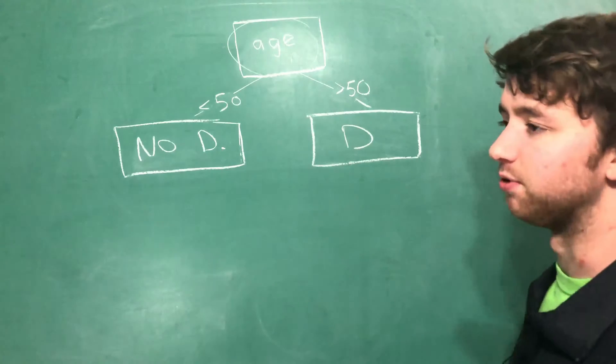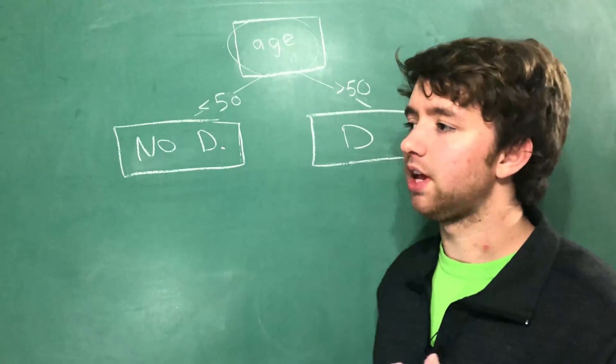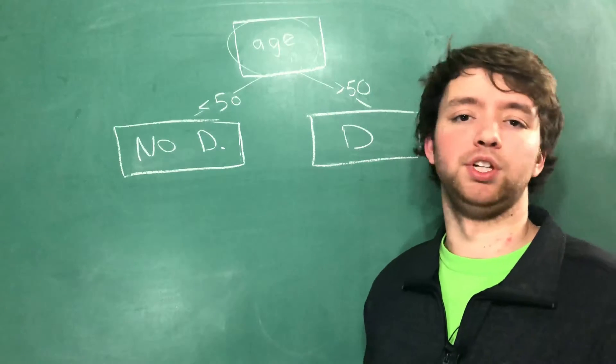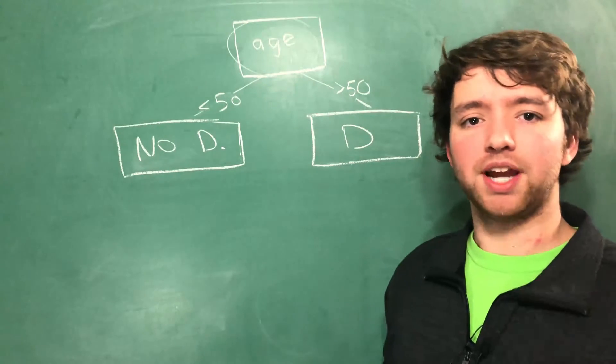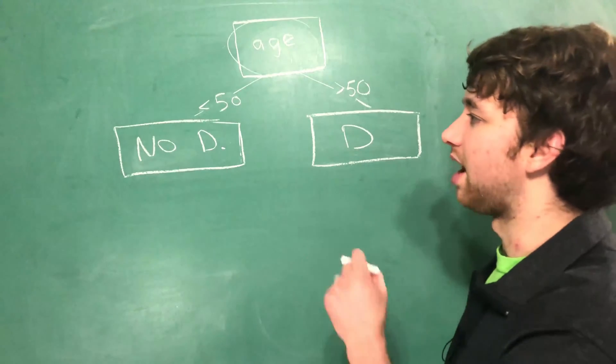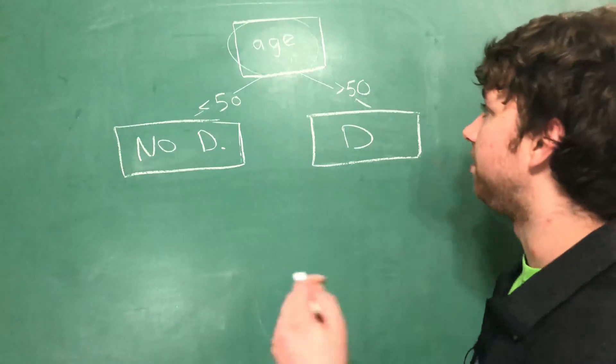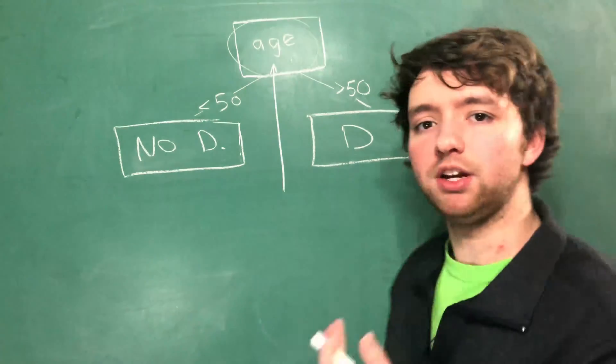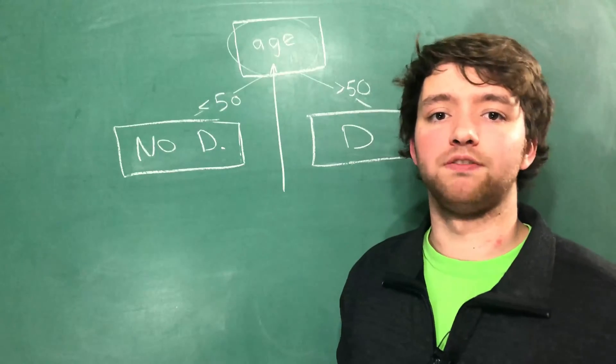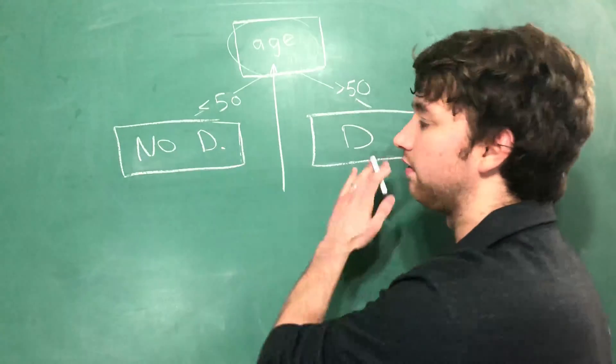In a perfect world it would be this simple. You know, you go into the doctors. Hey doctor, I think I might have diabetes. Well how old are you, 49? Nope, you don't have diabetes, but give it a year. But it's not that simple. And the reality is it's going to be a lot more complex than this. The thing that we want to put here is going to split our data based on target feature values as close as possible into this perfect world.